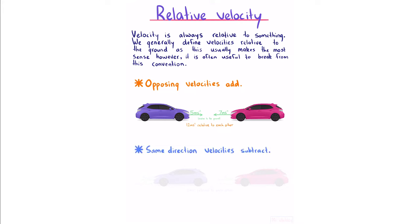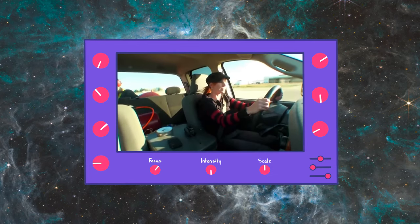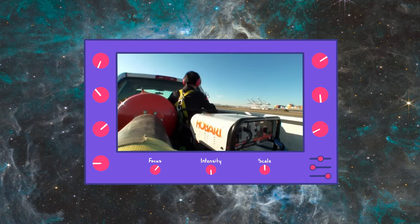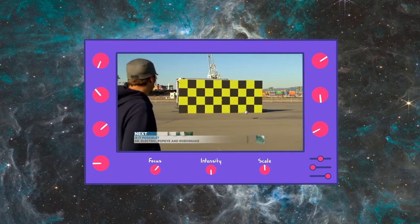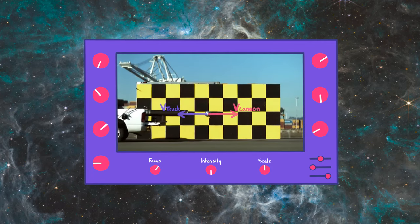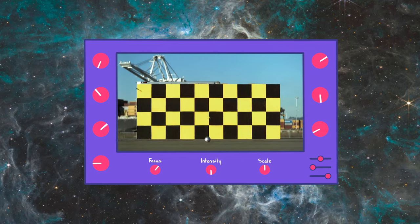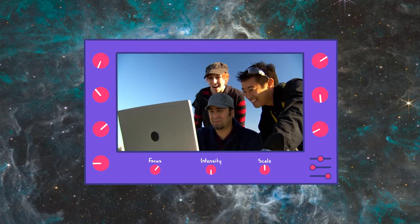Same-direction velocities subtract. If two cars move in the same direction at 5 and 7 meters per second relative to the ground, these velocities subtract, giving 2 meters per second relative to each other. Here we see a truck moving at a particular velocity carrying a cannon that fires a ball with an equal and opposite velocity — these cancel out and the ball is momentarily stationary before falling straight down.